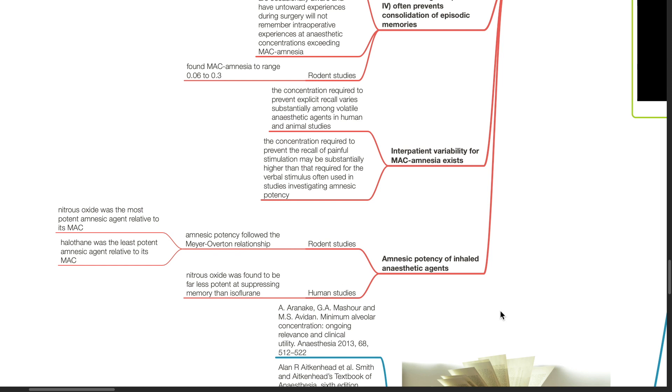The concentration required to prevent explicit recall varies substantially among volatile anesthetic agents in human and animal studies. The concentration required to prevent the recall of painful stimulation may be substantially higher than that required for the verbal stimulus often used in studies investigating amnesic potency.